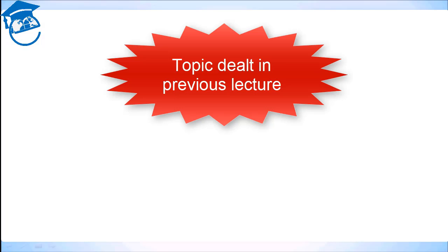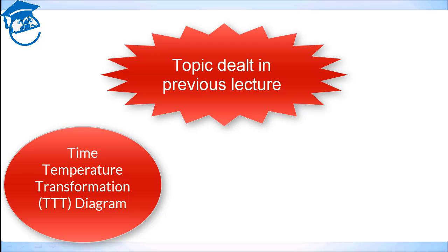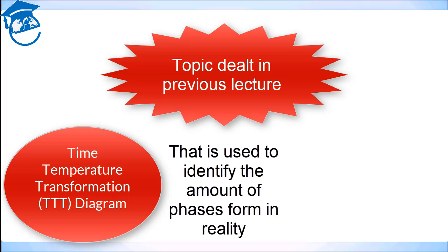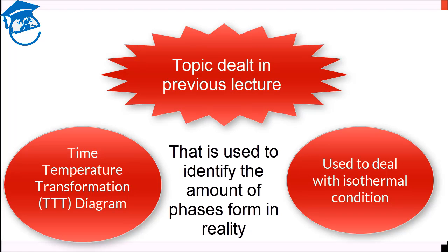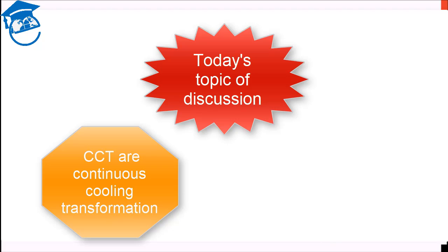Previous lecture I introduced you to the concept of TTT diagrams. Today we will see something which is known as CCT diagram. If you remember correctly, TTT diagram used to deal with isothermal condition. You take the specimen at a particular temperature, hold it at that temperature and see what are the phase changes with time.